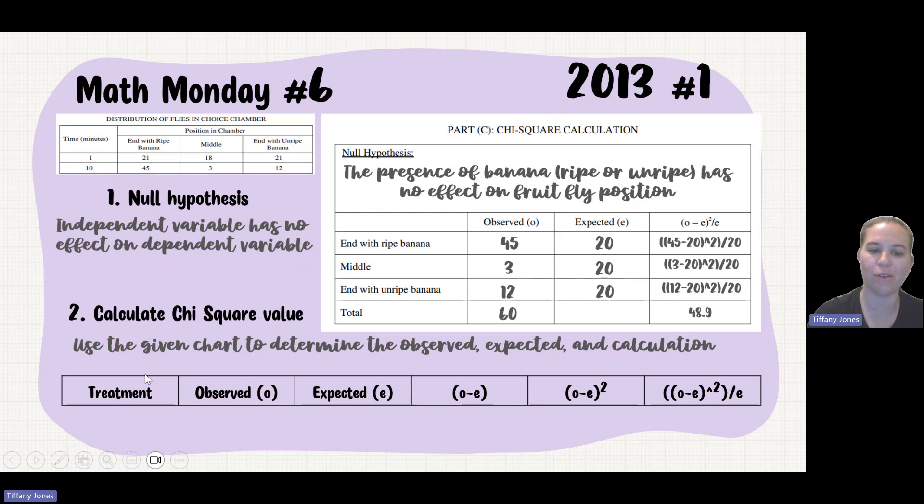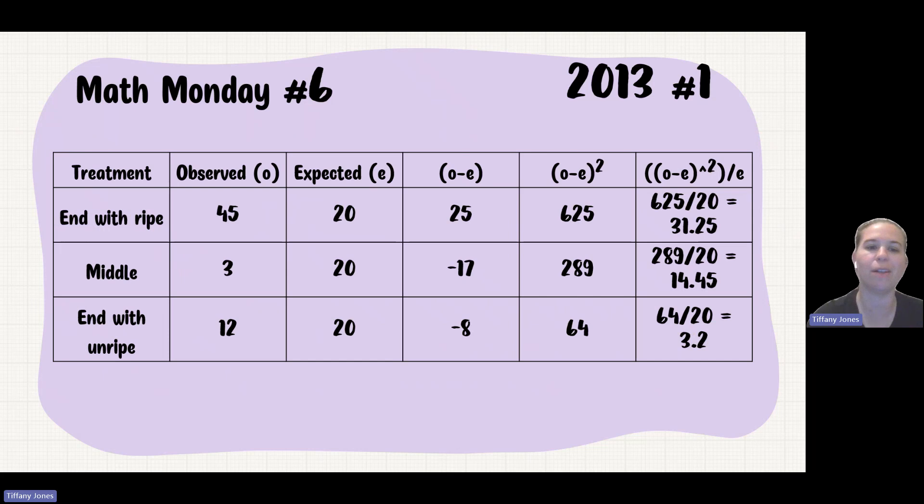If you've seen any of my other videos, you know that I like to use this kind of big long table. So if we use the big long table, we've got the end with the ripe, the middle, the end with the unripe. We have the same values of 45, 3, and 12, and 20, 20, 20. But now we're going to break it down into each individual component of the actual equation. So 45 minus 20 gives us 25, 3 minus 20 gives us negative 17, 12 minus 20 gives us negative 8.